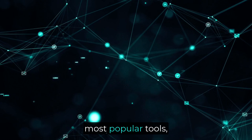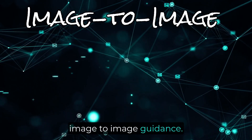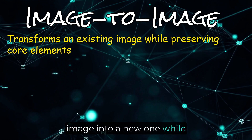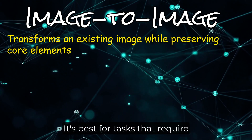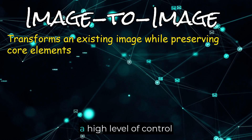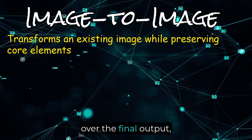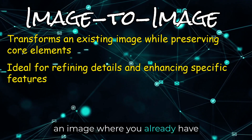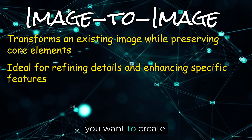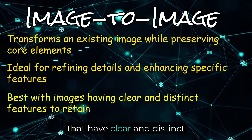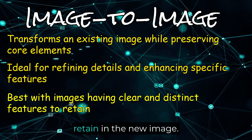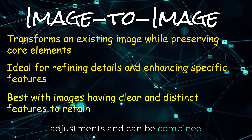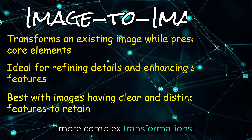First, we'll cover one of the most popular tools: image-to-image guidance. This tool transforms an existing image into a new one while preserving the core elements of the original. It's best for tasks that require a high level of control over the final output, such as refining details or enhancing specific features where you already have a strong idea of what you want to create. It works best with images that have clear and distinct features you wish to retain, and allows for precise adjustments that can be combined with other guidance tools for more complex transformations.